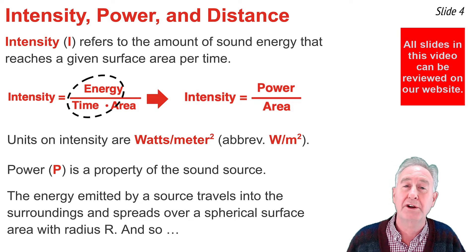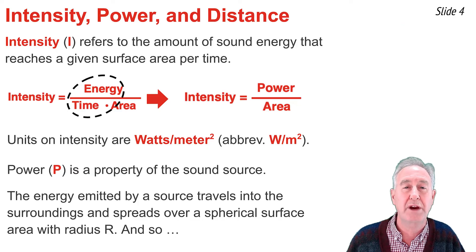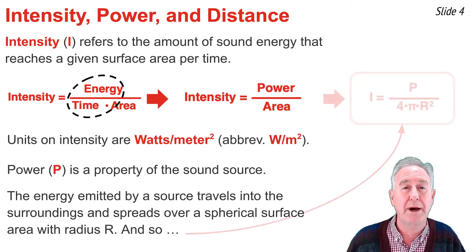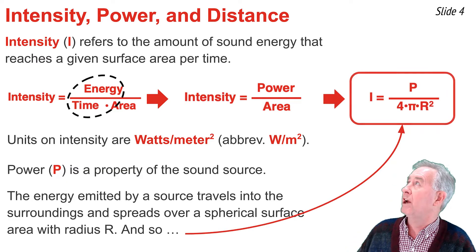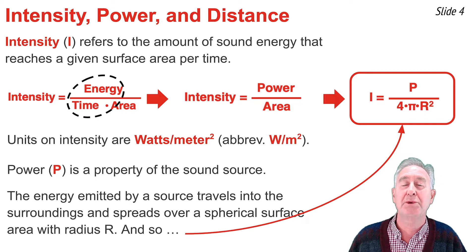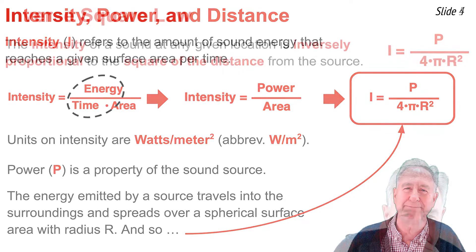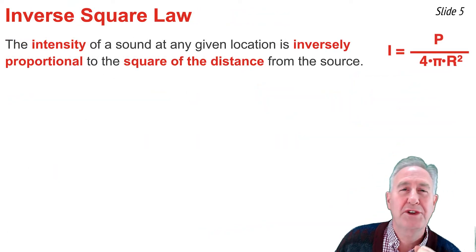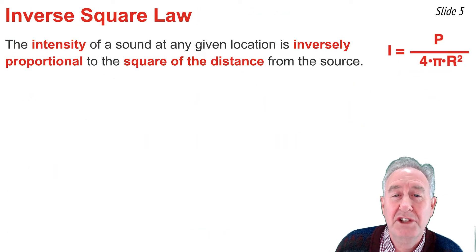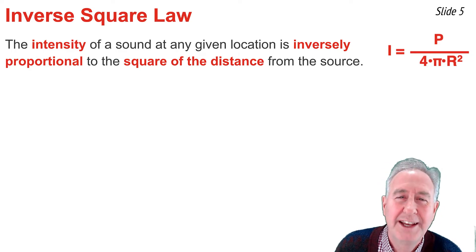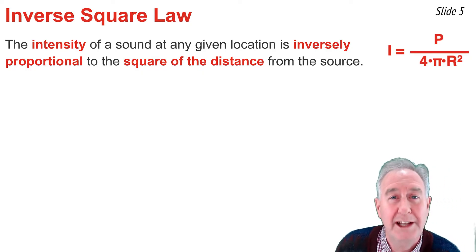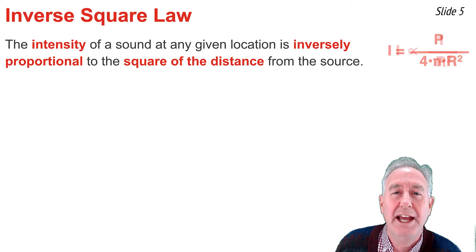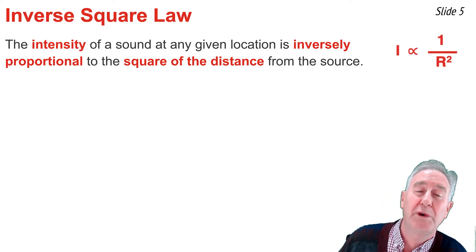The size of the sphere increases with time as the wave continues to travel outwards from the source. Because the area of a sphere is 4πr², I can rewrite the equation as: intensity equals power P divided by 4πr². One concept this equation conveys is that the intensity of a sound wave is inversely proportional to the square of the distance from the source — that is, I is proportional to 1/r².